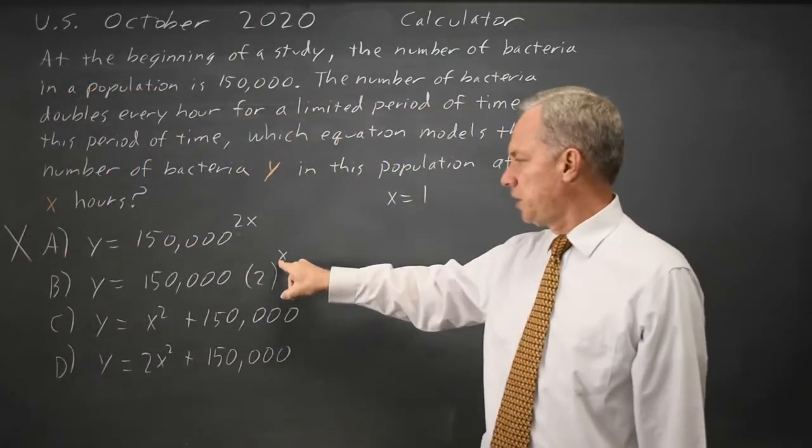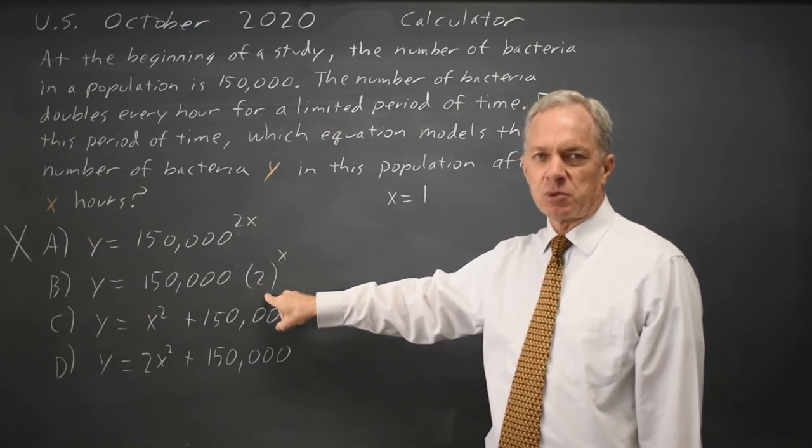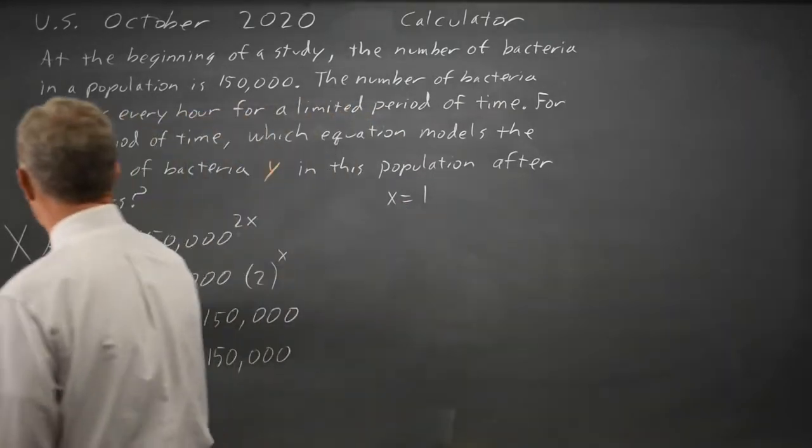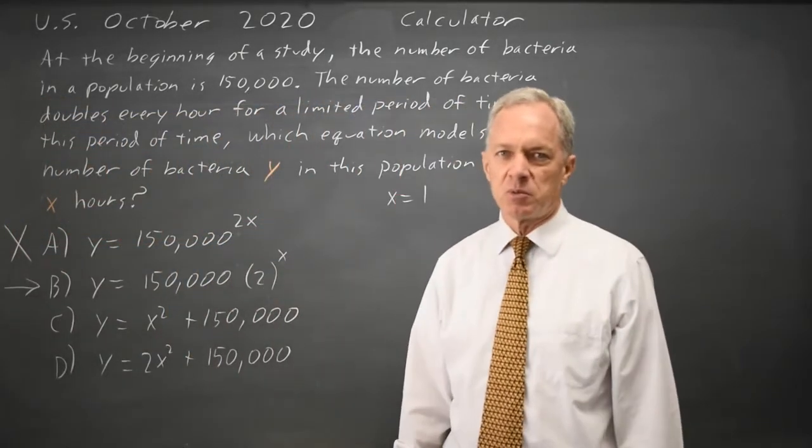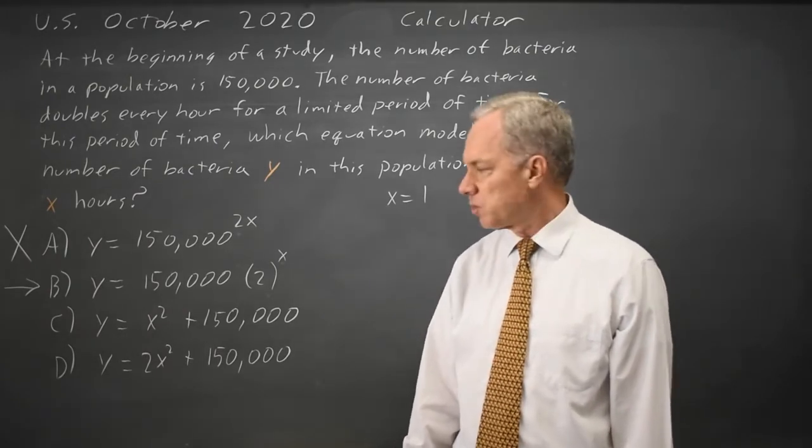If I put a 1 in here I get 150,000 times 2 to the first, which is 150,000 times 2. I am doubling my number so this could be the right answer. But I'm going to check the others in case there's more than one answer that gives me the correct value at x equals 1.